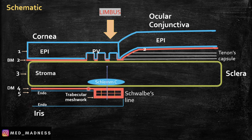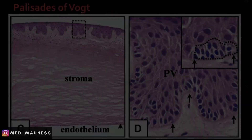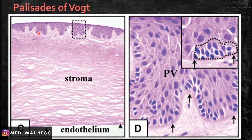Two more important points: at the limbus, the sub-epithelial connective tissue is thrown into folds. This area is called the palisade of Vogt. On the histology slide, you can appreciate the sub-epithelial tissues thrown into many folds, so as to increase the surface area. The epithelial basal cells within the palisade of Vogt act as stem cells that help with regeneration.